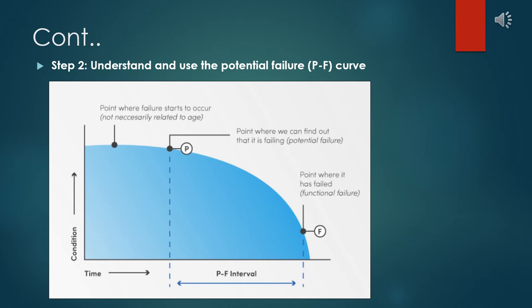Step 2 is all about the PF curve — understand and use the potential failure curve. Talking about condition-based maintenance without the PF curve is like talking about a car without wheels; it just doesn't work. The PF curve demonstrates the relationship between machine breakdown and how it can be prevented. It is based on the fact that a machine might be in the early stages of failing even if it seems to be working fine. Along the x-axis of the curve is time, and as you move through time, the machine moves from the point of potential failure to the point of actual functional failure.